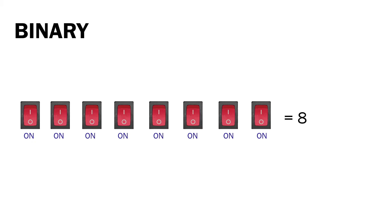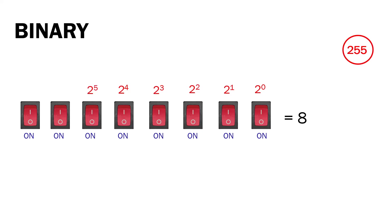The switches represent a number as large as 8 by turning all of them to on, and with binary these switches can represent a number as high as 255. Because again in binary, each digit represents an increasing power of two: the first switch has a positional value of two raised to zero, next is two raised to one, then two raised to two, two raised to three, two raised to four, two raised to five, two raised to six, and two raised to seven.